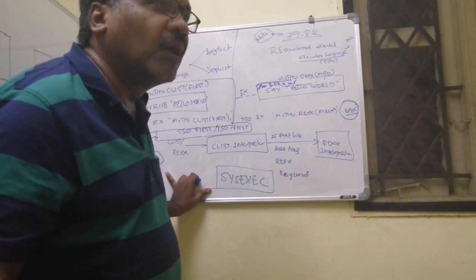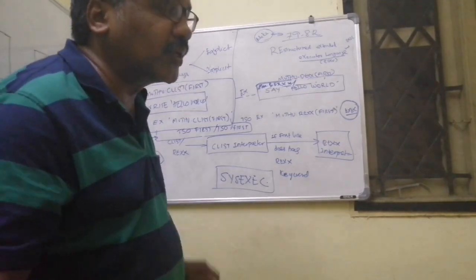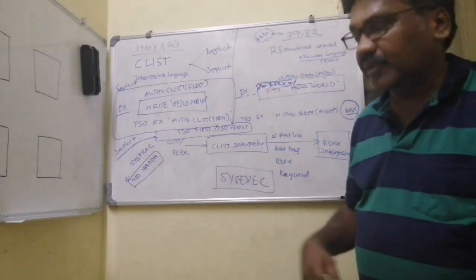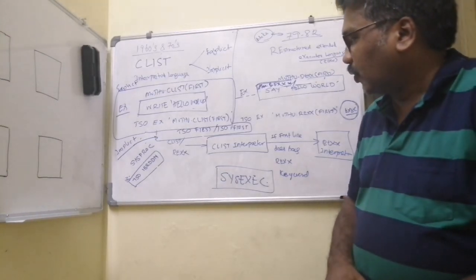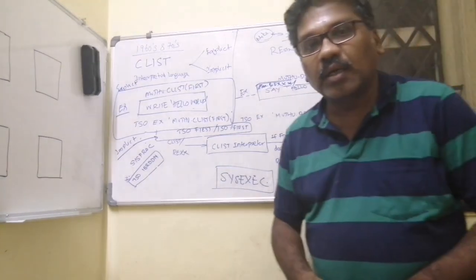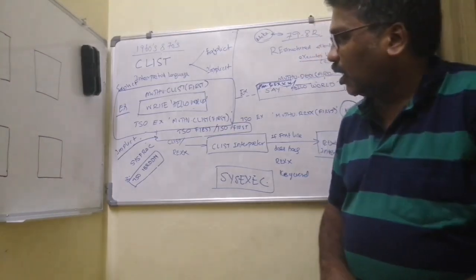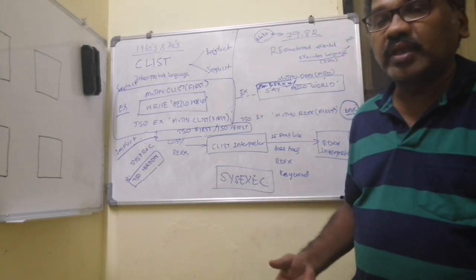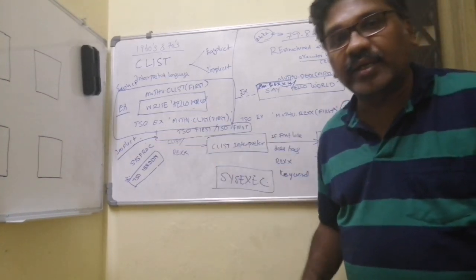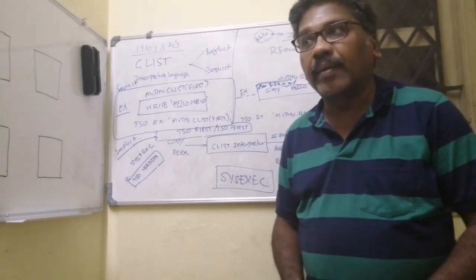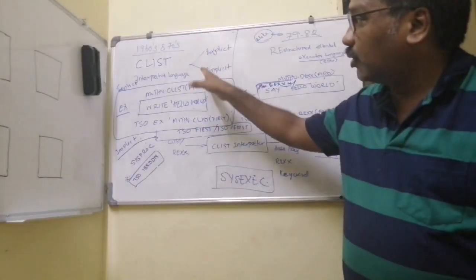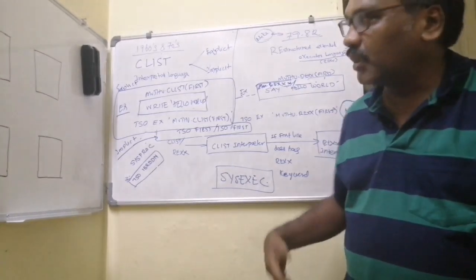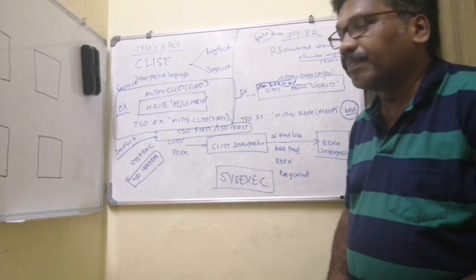SYSPROC is shared for both REXX and CLIST, while SYSEXEC is dedicated for REXX programs. To find what data sets are allocated against SYSEXEC, give the command TSO ISRDDN and find SYSEXEC. We'll also cover topics like how to override SYSPROC and SYSEXEC allocations, how to add a data set on top of existing ones using the ALLOCATE command, and batch ways of executing a REXX program.